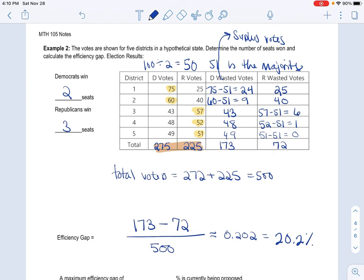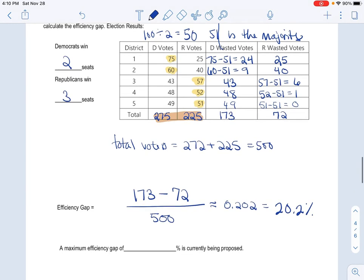So this is the issue. That is really large. Now, I briefly said it in the last video, but the maximum efficiency gap should be around 7% to 8% in order to be fair. So that's clearly not fair, because it's way over 7% to 8%. The other way I can see that is that we have, let me get a different color, we have five districts.